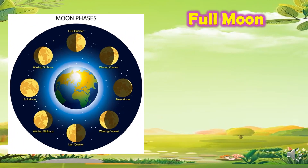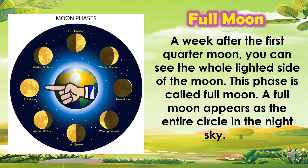Another phase is the full moon. A week after the first quarter moon, you can see the whole lighted side of the moon. This phase is called full moon. A full moon appears as the entire circle in the night sky.